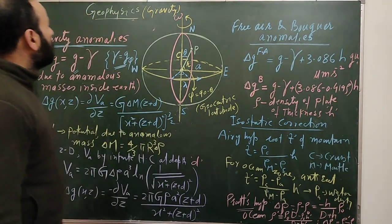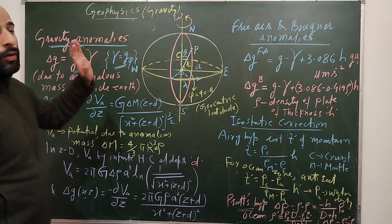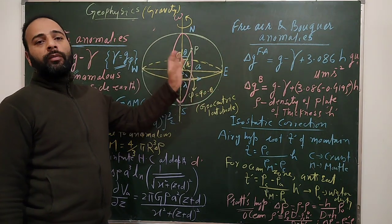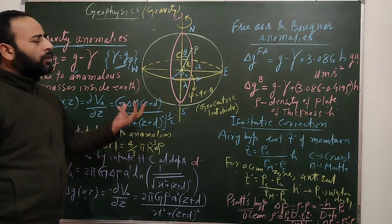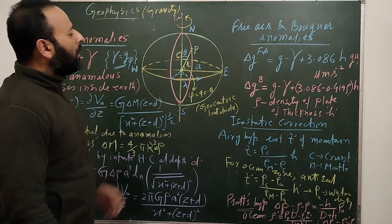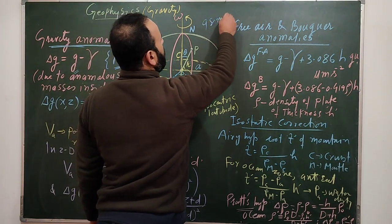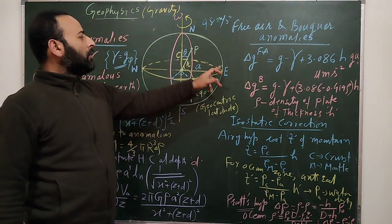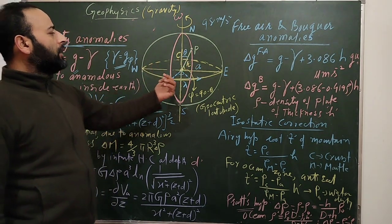In this video we will review gravity anomalies because we need to remember all the formulae before solving geophysics problems. Gravity anomaly relates to the acceleration due to gravity, whose average value on Earth's surface is 9.8 m/s². This value varies when we go from the equator to the pole, and also changes with density.